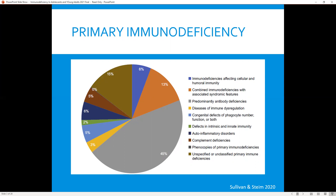The majority of primary immunodeficiencies that we see really affect humoral immunity, either predominantly antibody deficiencies or those that affect cellular and humoral immunity, or combined immunodeficiencies with associated syndromic features. You can see that that comprises about 65% of all primary immunodeficiencies.